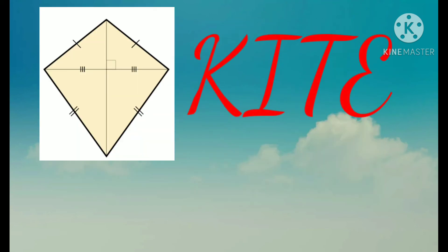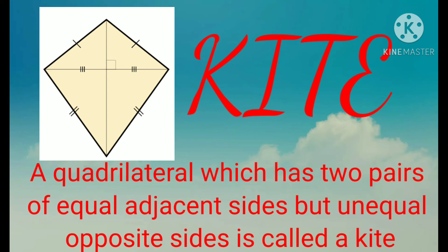Now let us see the last quadrilateral named kite. A kite is a quadrilateral which has two pairs of equal adjacent sides. Adjacent sides means the sides with the common vertex, but unequal opposite sides.